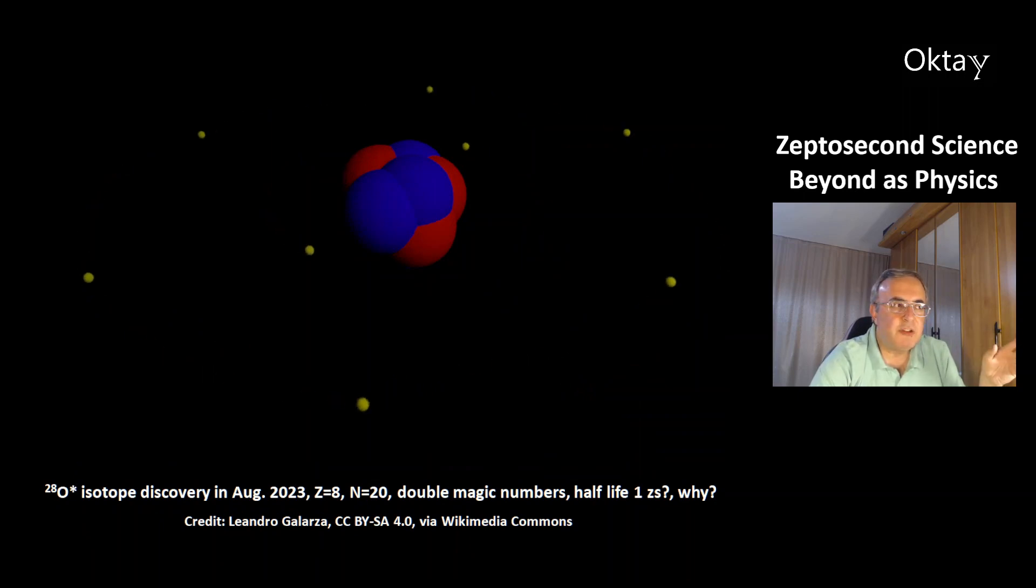This is a newly discovered isotope oxygen-28. It was discovered in August 2023. It has atomic number 8 and neutron number 20. These two numbers are called double magic numbers. And what's magical about them is that configurations with these numbers are typically quite stable. But this isotope, oxygen-28, is an exception because it has a very short half-life. It could be in the zeptosecond time period. And it is not clear why.